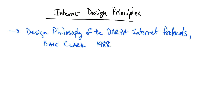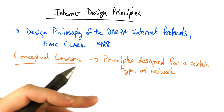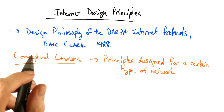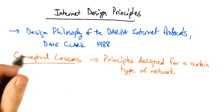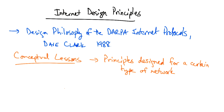Before we jump into any details, let's talk about some of the high-level lessons. One of the most important conceptual lessons is that the design principles and priorities were designed for a certain type of network. And as the Internet evolves, we are feeling some of the growing pains of some of those choices. In the last lesson, we talked about a number of the problems and growing pains with the Internet. And it's worth bearing in mind that many of the problems that we are seeing now are a result of some of the original design choices.